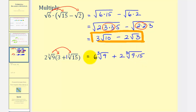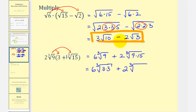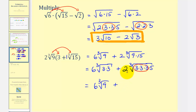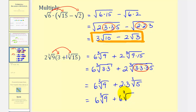Now we simplify the cube roots if possible. We have six times the cube root of nine, which equals three times three — we can tell this won't simplify because we don't have three equal factors or a perfect cube factor. Then plus two times the cube root of nine times fifteen: nine is three times three, and fifteen is three times five. Here we do have a perfect cube factor of three cubed, so the cube root of three cubed is three. That gives us two times three times the cube root of five. So our result is six cube root of nine plus six cube root of five. We can't combine these because they are not like radicals.